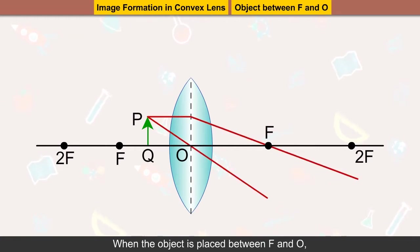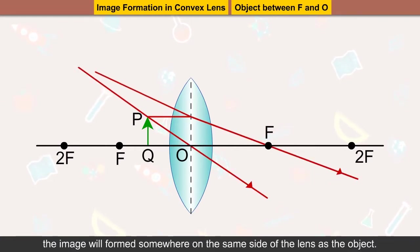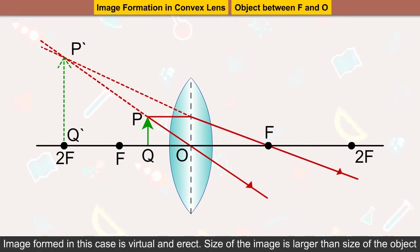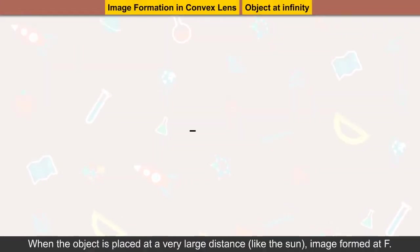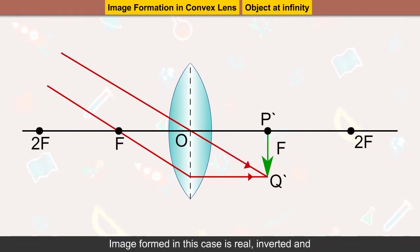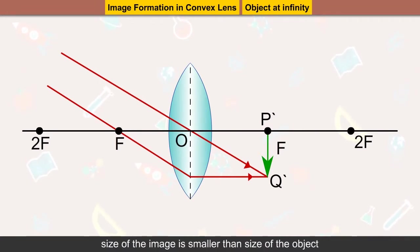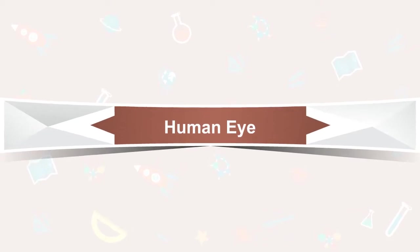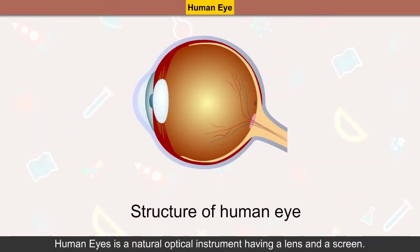Object between F and O: when the object is placed between F and O, the image will be formed on the same side of the lens as the object. The image formed is virtual, erect, and larger than the object. Object at infinity: when the object is placed at a very large distance like the sun, the image is formed at F and is real, inverted, and smaller than the object.